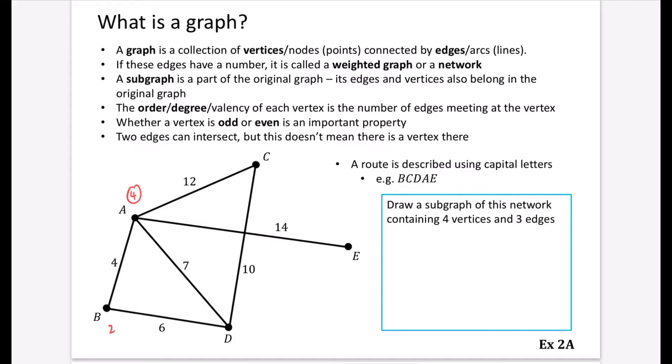We can see that B has got a degree of two, C has a degree of two, D has a degree of three, and E only has a degree of one because of the fact there's just one line that's going into E there.